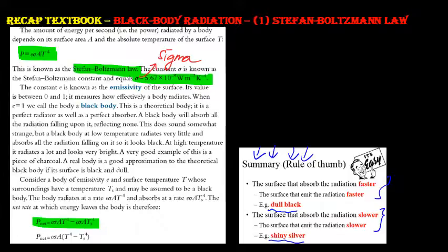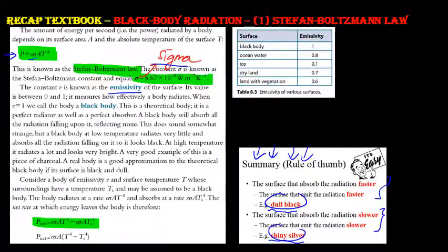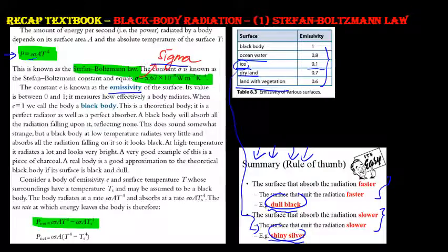We introduce the Stefan-Boltzmann law: Power P = eσAT⁴. The first term, e, is the emissivity of the surface, determined basically by the surface color — whether it is dull black or shiny silver — and found by experiment. Here is a table of substances: ice has very low emissivity, similar to shiny silver, while a perfect blackbody has emissivity equal to one.